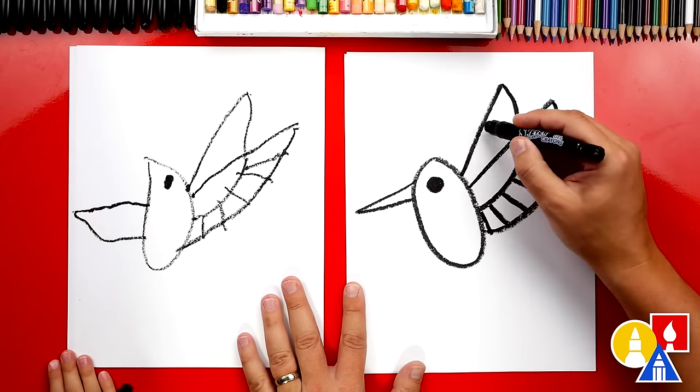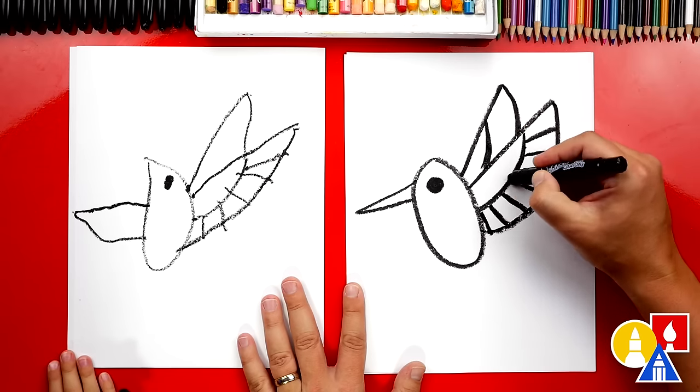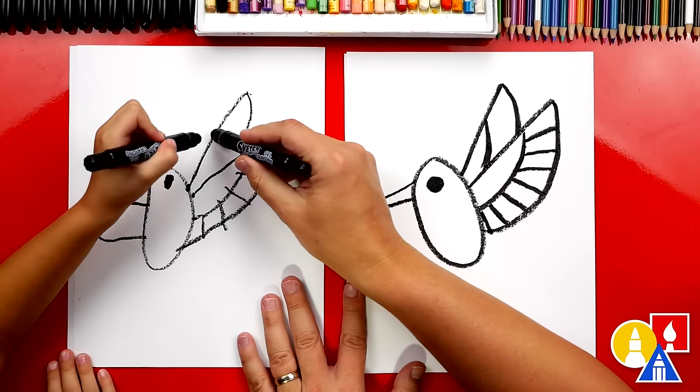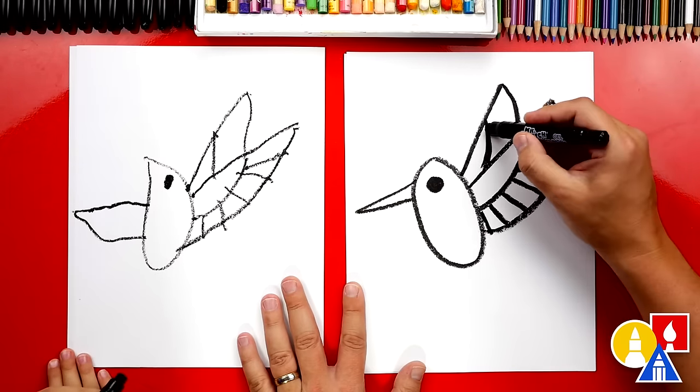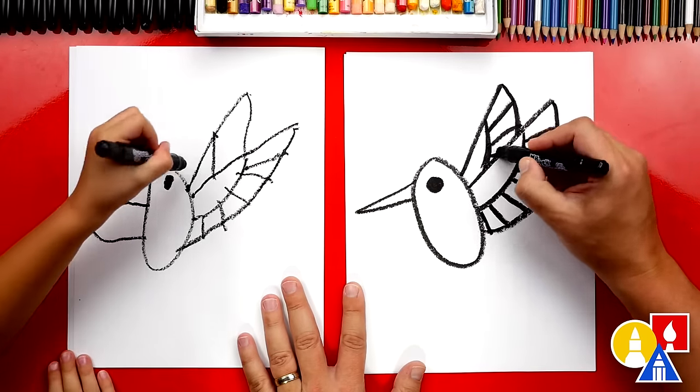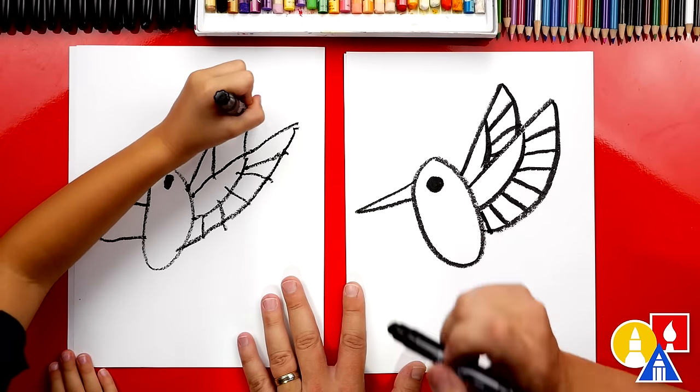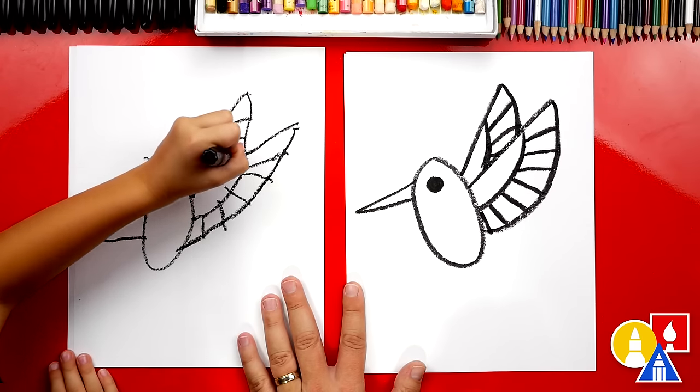Yeah, then let's draw that curve on the inside just like we did right here. Let's start here and draw a curve down to there. And then let's draw more feathers on that wing. We can only draw a few, huh? There you go. You did it.